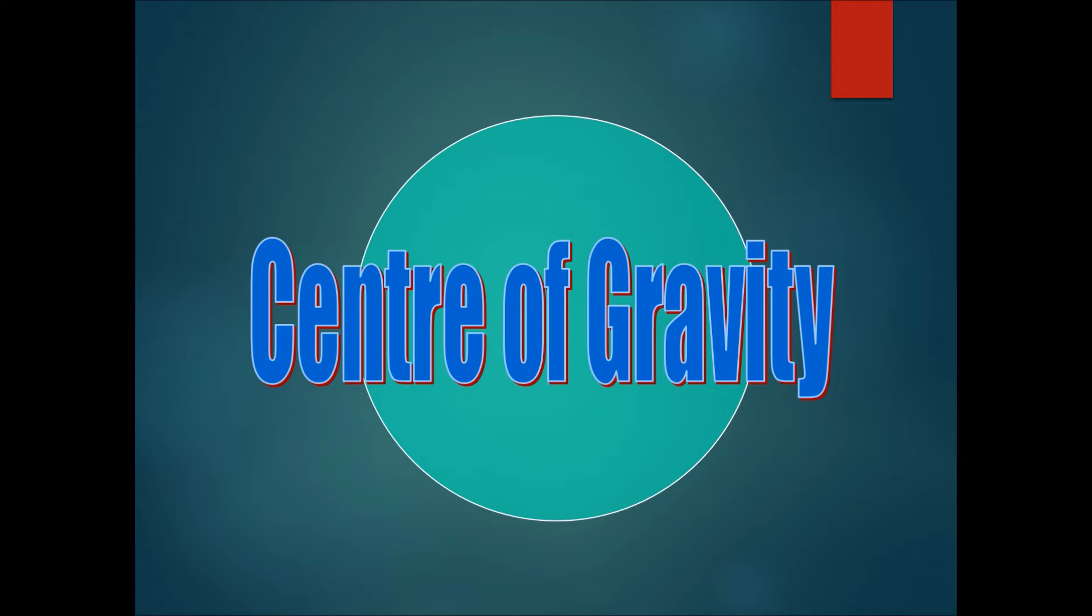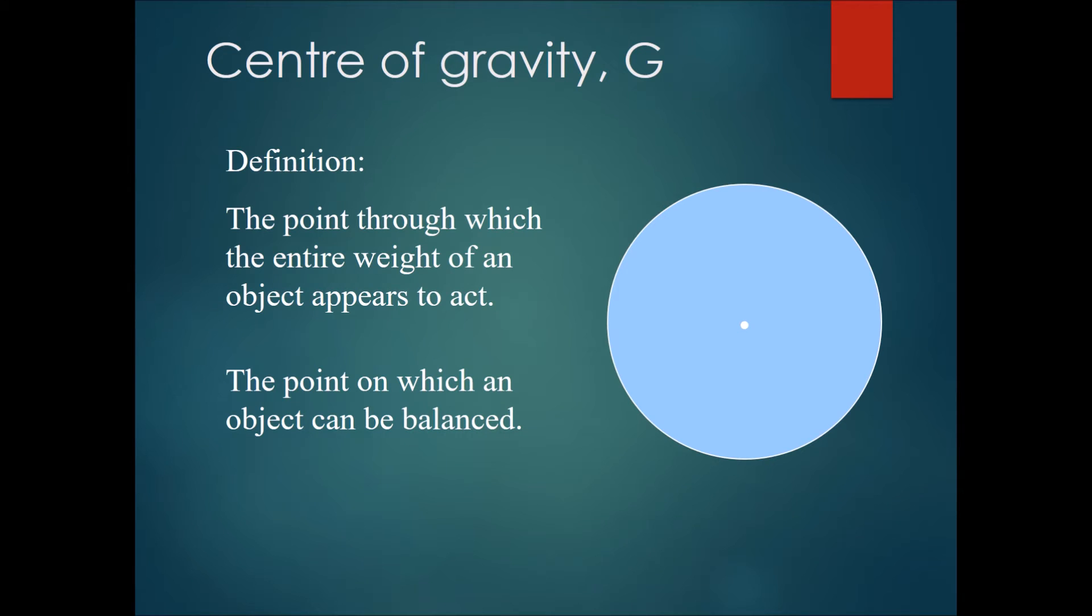The second part of this whole chapter is called the center of gravity. The definition of center of gravity is the point through which the entire weight of the object appears to act. Or you can say alternatively, the point on which an object can be balanced in an unofficial definition.